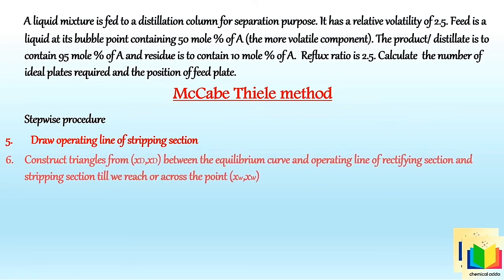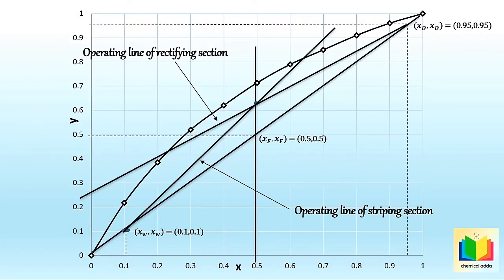The next step is to construct triangles (steps) from (xD, xD) between the equilibrium curve and the operating lines, until we reach or pass the point xW. We draw a horizontal line from xD to the equilibrium curve, then a vertical line from the equilibrium curve down to the operating line of the rectifying section. This stepping process continues until we reach or cross the point xW.